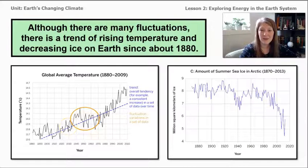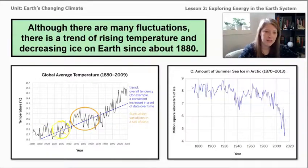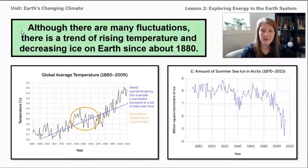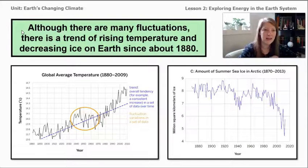During our last lesson, we found evidence of a trend that's been happening on Earth since about 1880. These two graphs show that temperatures on the planet are increasing at the same rate that ice is decreasing. The key concept we discovered in lesson one is: although there are many fluctuations, there is a trend of rising temperature and decreasing ice on Earth since about 1880. In this lesson, we're going to investigate what could be causing this, paying special attention to energy, because temperature and melting ice are connected to energy.